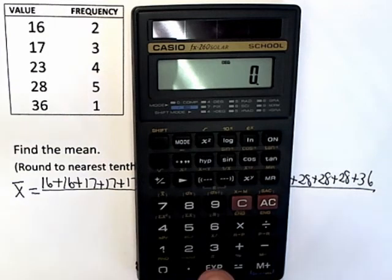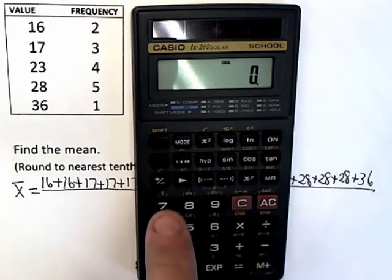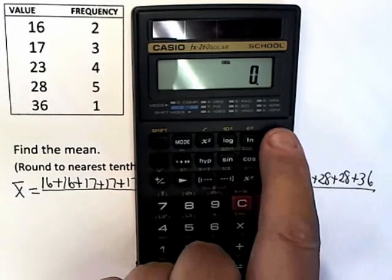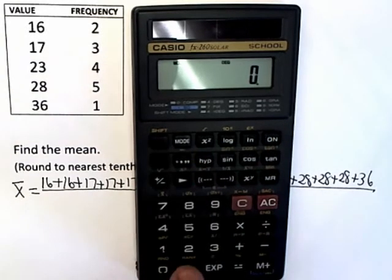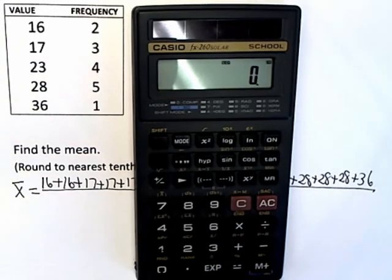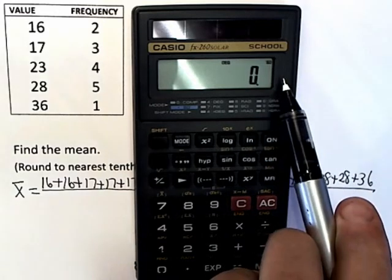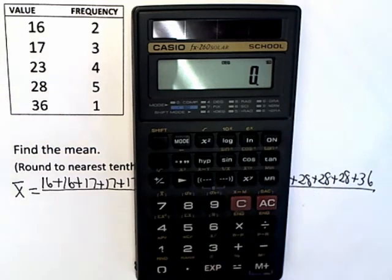So rather than writing it out that way, I would actually just do it this way. I'd first go into stats mode. If I hit on, that makes sure everything's cleared out. Mode decimal point takes you into the stats mode. And to be absolutely certain you're in, you should see this little SD up in the right-hand corner. That means you are in the stats mode.